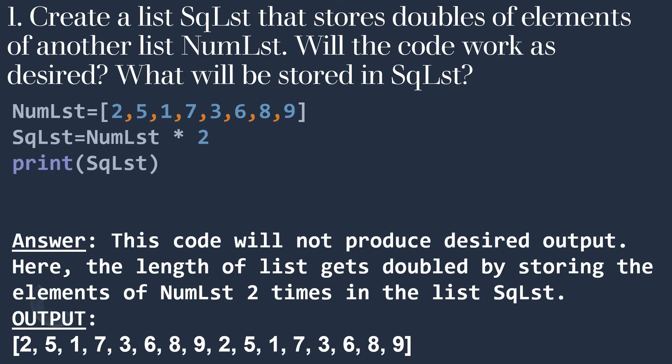Here the length of the list gets doubled by storing the elements of numlst two times in the list sqlst. Because we assigned numlst * 2, that means whatever is there in numlst will be doubled — that means it will be printed two times consecutively. So you can see the content of sqlst.